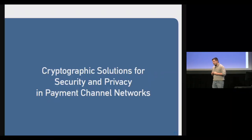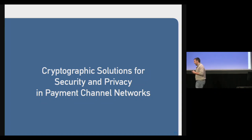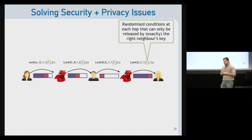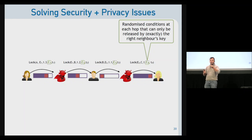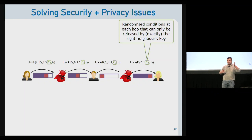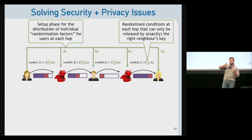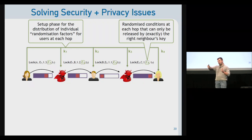In our group we are developing cryptographic solutions to improve security and privacy in current payment channel networks. The main observation is that most of these problems arise from using the same Y value at each hop in the path. It might help to have randomized conditions at each hop that can only be solved when you get the key from the right neighbor. To do that, we add a setup phase where the sender distributes individual randomization factors to each hop.